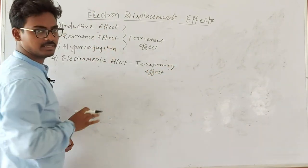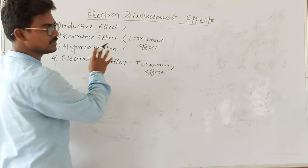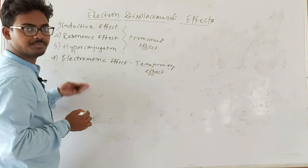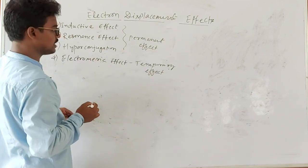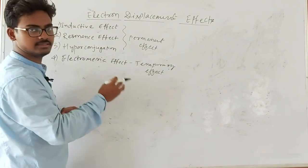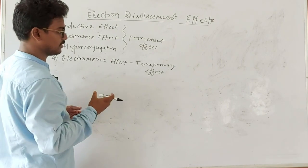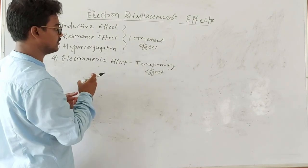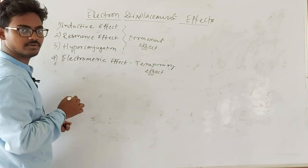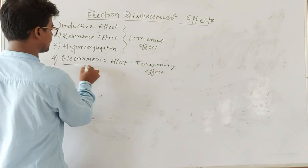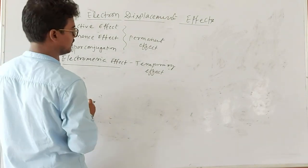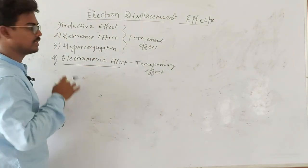In permanent effects, the effect is already present in the molecule. The temporary effect — the electromeric effect — occurs in the presence of an attacking reagent, whenever two molecules are combining during a chemical reaction.